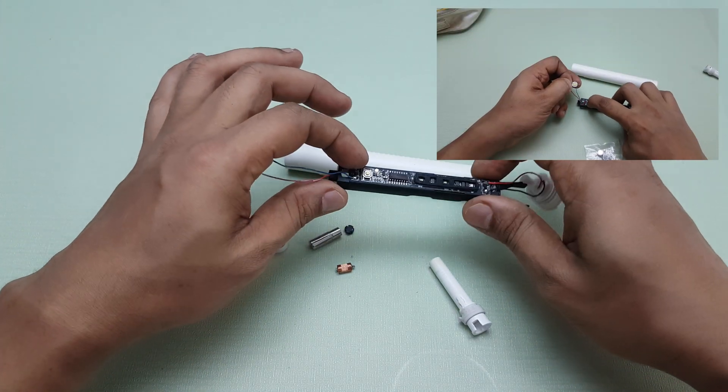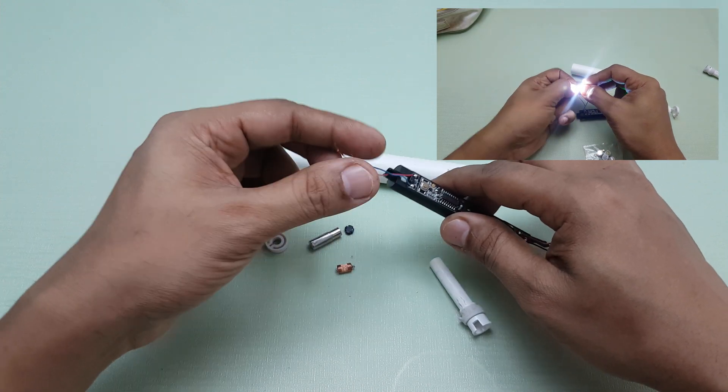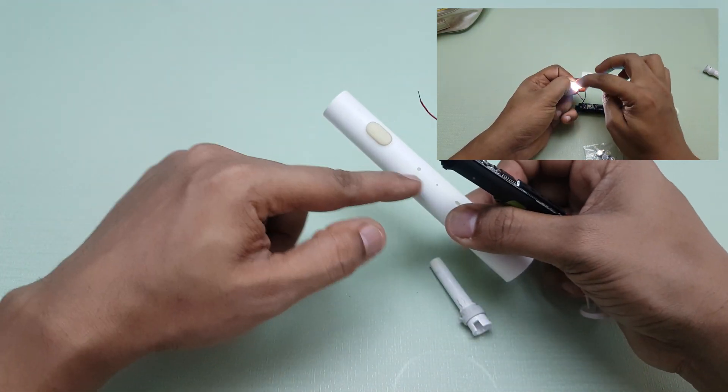I'll be actually converting this into an LED torch now because I still have the power. The motor is gone, but I can put an LED here, paste it over here and then use it as a two powered LED torch.